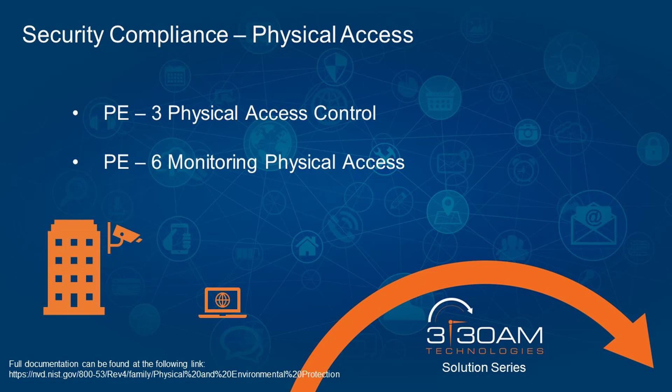The National Institute of Standards and Technology defines controls that support the physical protection of information technology assets. Two controls we will highlight here are PE3 and PE6. The PE3 control addresses authorizing physical access to the building or buildings where computers, printers, phones, and other assets are located.